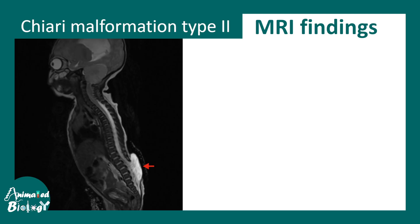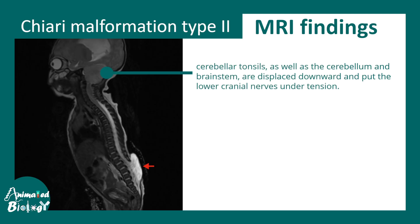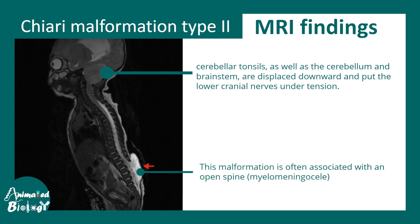In Chiari malformation type 2, the distinct features include the cerebellar tonsils, the entire cerebellum, and the brain stem having descended down. The herniation is pretty clear. It is also associated with myelomeningocele, which is a pretty distinct feature of Chiari malformation type 2.